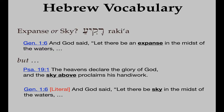So literally in Genesis 1:6 you could say, 'Let there be sky — whatever atmosphere — in the midst of the waters.' That communicates a little bit more clearly what's going on in that verse.